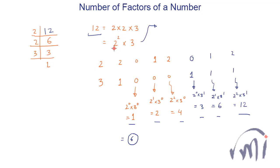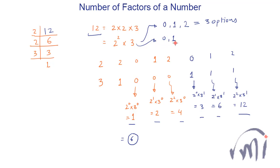Here we have 2² where 2 is a prime number and this exponent 2 is the number of times 2 appears in the prime factorization of 12. So you actually have 3 options for this 2: you can take it 0 times, 1 time, or 2 times. And for the 3 you have 2 options: take it 0 times or 1 time. So you have 3 × 2 = 6 total options, which gives you the 6 different factors of 12.